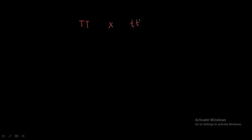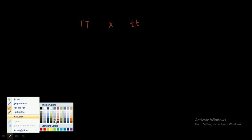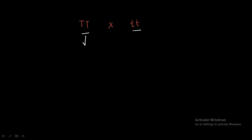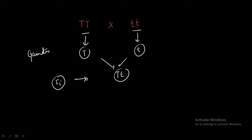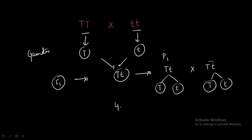To recap: initially we took capital T capital T (the tall plant) and crossed it with small t small t (the dwarf plant). The gametes produced are capital T and small t respectively. Crossing these gametes gives us capital T small t as the F1 generation. After F1, when we self capital T small t with capital T small t, we get gametes capital T and small t from each parent, leading to four offspring in the F2 generation.